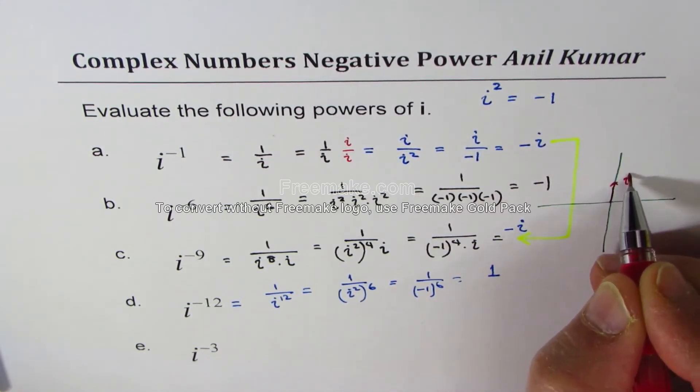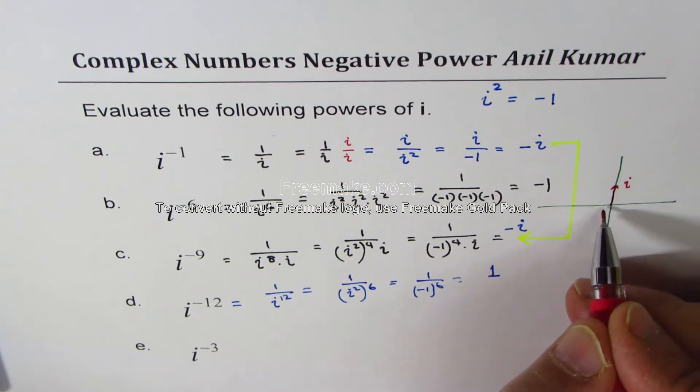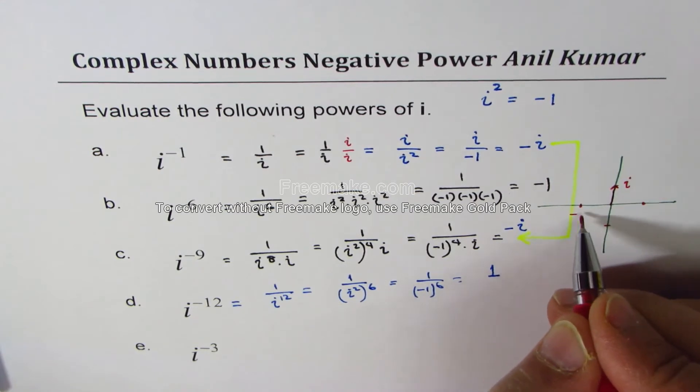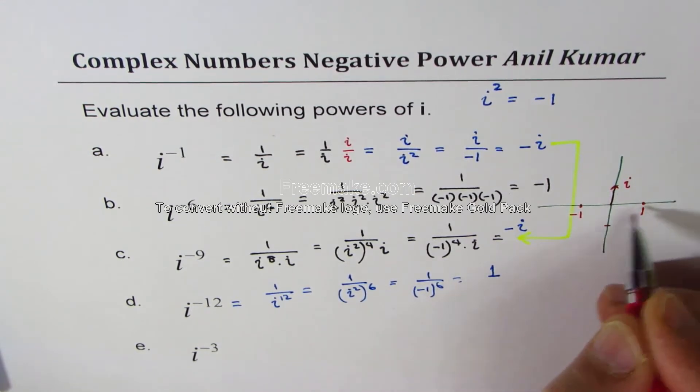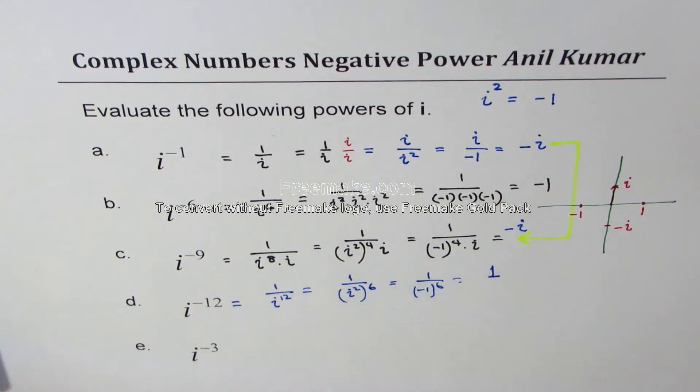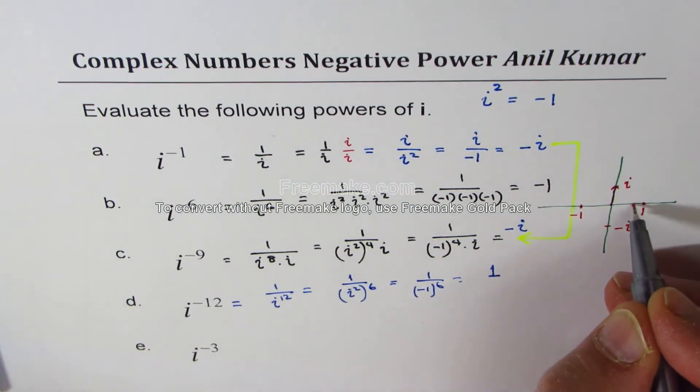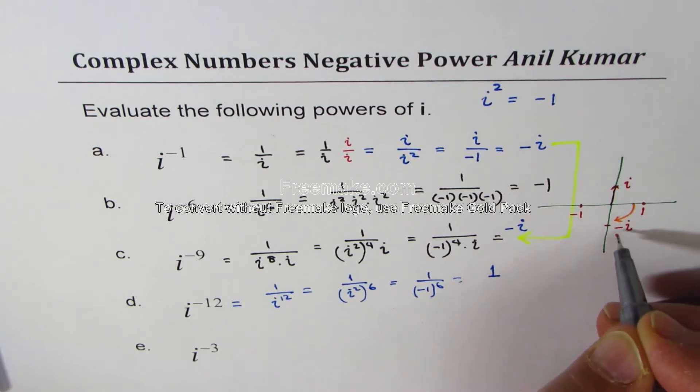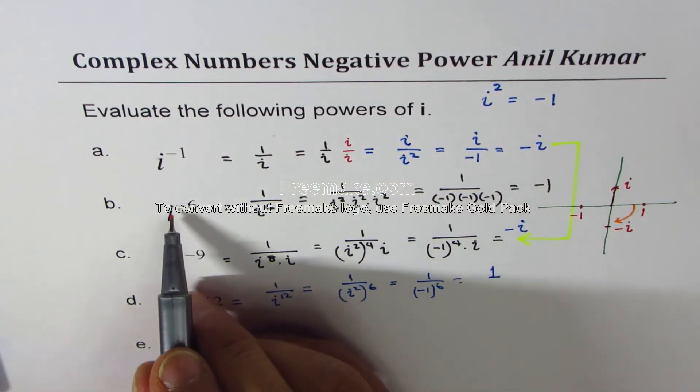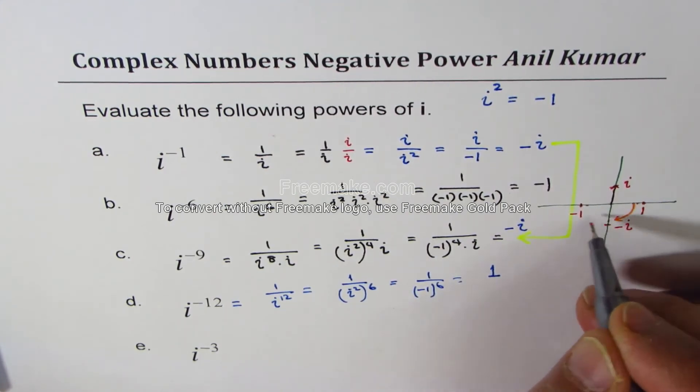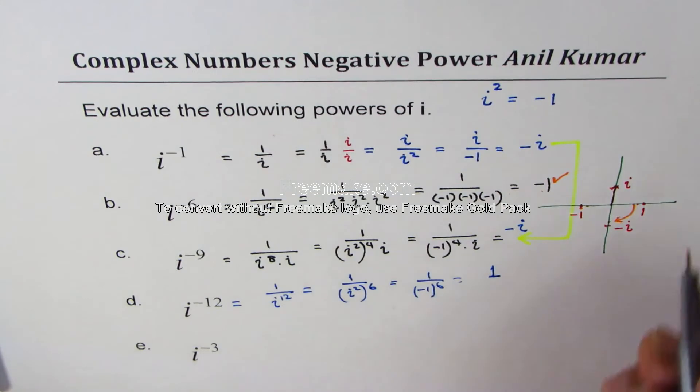And here we have these positions are minus 1. This is 1. These are real positions. And this is minus i, correct? Now let us see what we are getting. When I do i to the power of minus 1, I am actually moving in this direction and getting this as minus i. Do you see that?